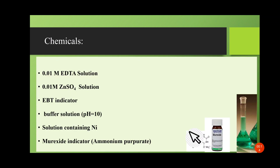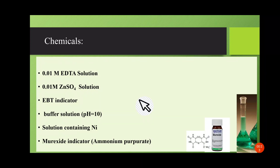Chemicals required for this experiment are: 0.1 molar EDTA solution, 0.1 molar zinc sulfate solution, Eriochrome Black T indicator, buffer solution of pH 10, solution containing nickel, and murexide indicator, also called ammonium purpurate.